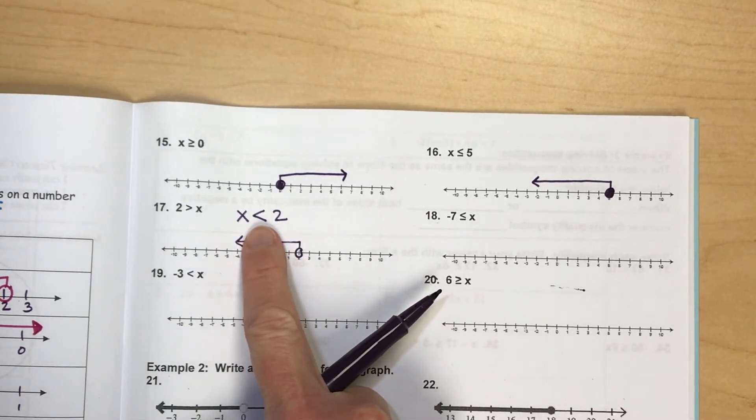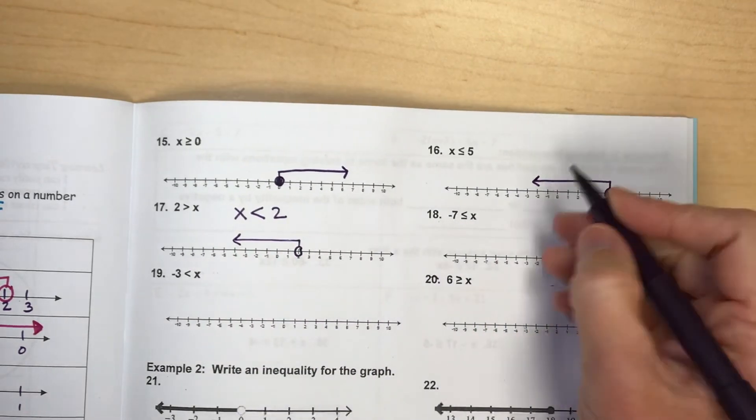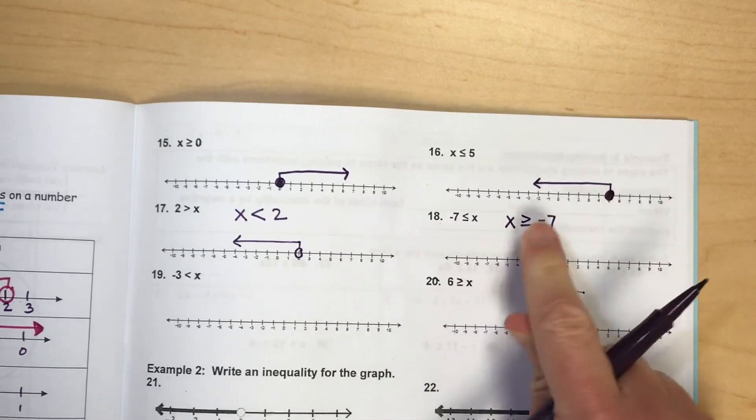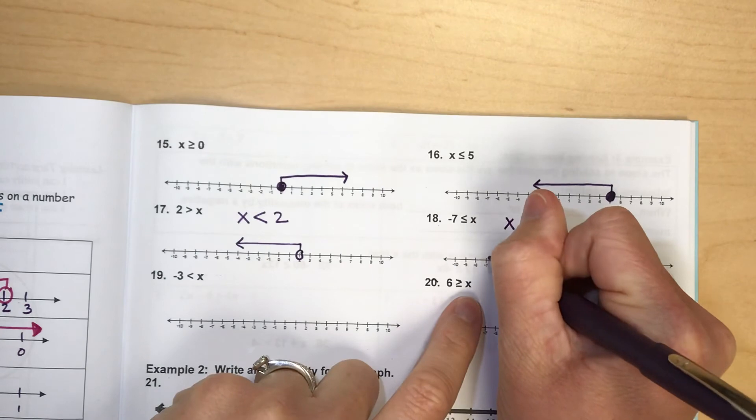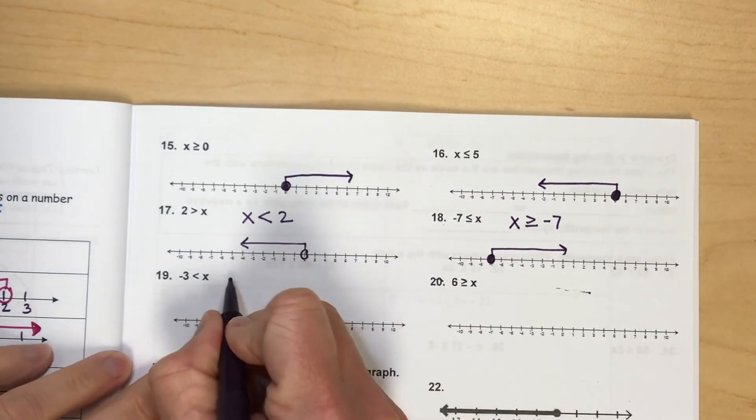And then your inequality symbol and the direction that you shade will always match. Again, I'm going to flip this around here. So if I flip my symbol around and my inequality around, it will read x is greater than or equal to negative 7. And greater than, we're going to shade to the right.